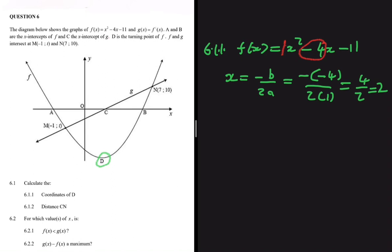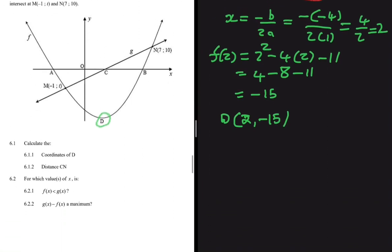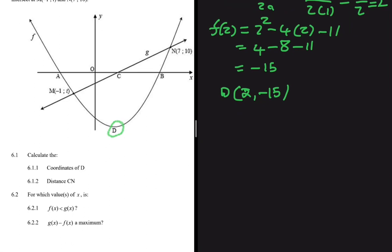Now we substitute x = 2 into the equation to find the y value. f(2) = 2² - 4×2 - 11 = 4 - 8 - 11 = -15. So the coordinates of D are (2, -15), and just like that we have the coordinates of D.